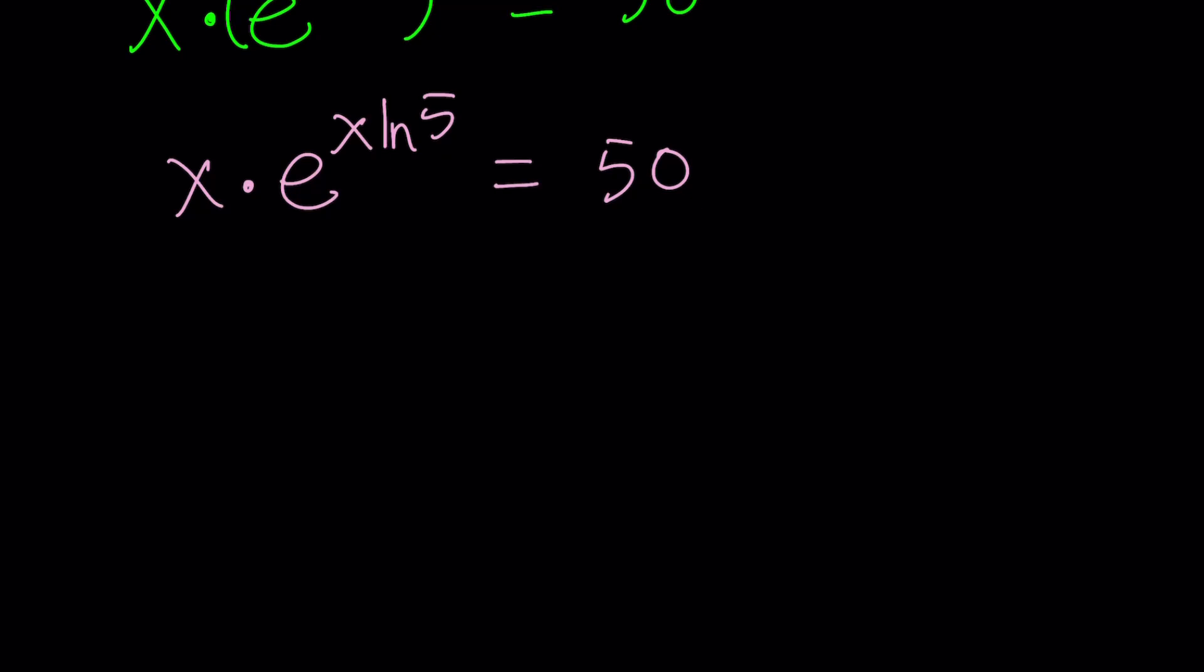Let's do it, and then I'll explain why this is helpful. Now, when we multiply by ln 5, we're basically getting the following. x ln 5 times e to the power x ln 5 equals 50 ln 5.